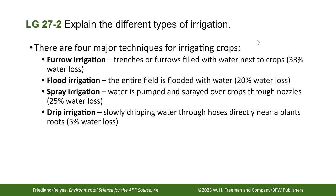Cranberry juice commercials show farmers standing in fields with waders — that's flood irrigation. Cranberries are typically grown with flood irrigation, but you only want to use that for certain types of fruits and vegetables. You wouldn't do it for potatoes, and grapes like dry environments.